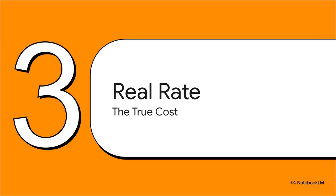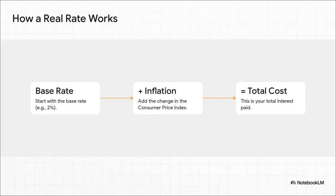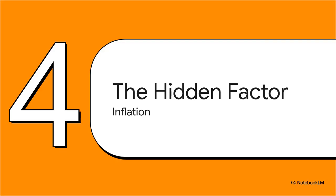Now let's flip the coin and look at the other side: the real interest rate. If the nominal rate is that sticker price, you should think of the real rate as the true cost of borrowing — this is where things start to get more interesting. The key difference is that this rate is linked to the consumer price index, which is the official way we measure inflation. That means a real interest rate isn't a fixed number; it's a moving target that goes up and down with the cost of living. So using that 2% example: with a 2% real interest rate, you start with that 2% base rate but then add the current rate of inflation on top of it, so your total cost is constantly changing as the economy changes.